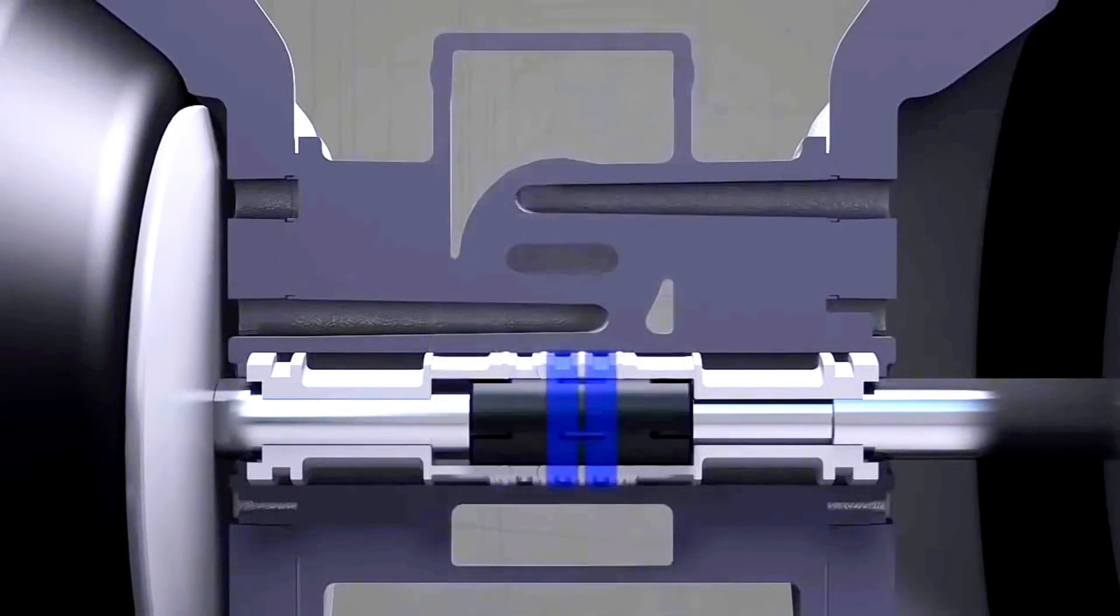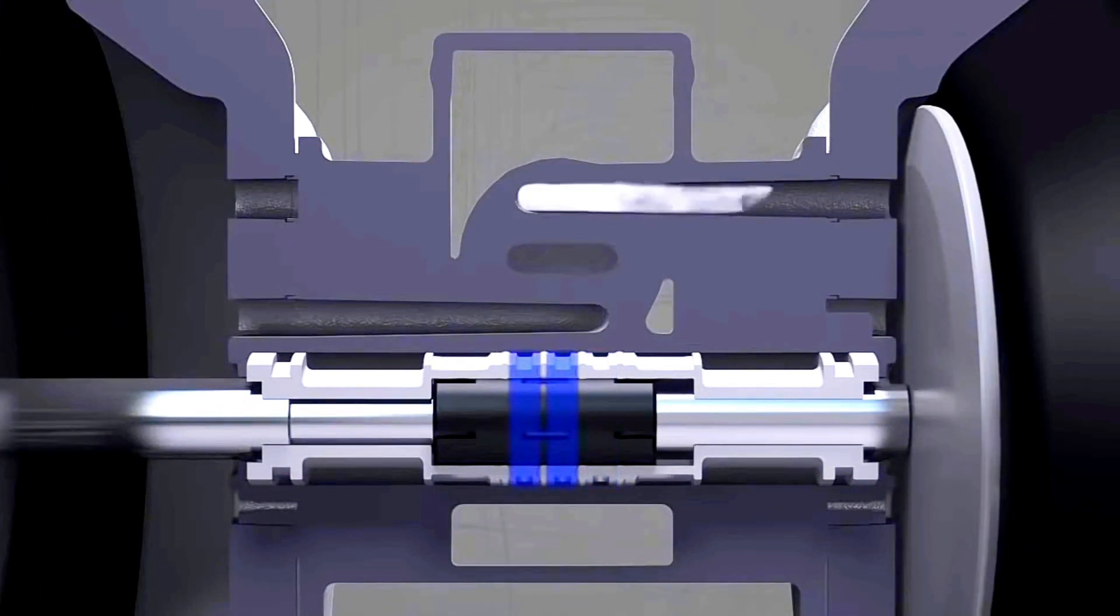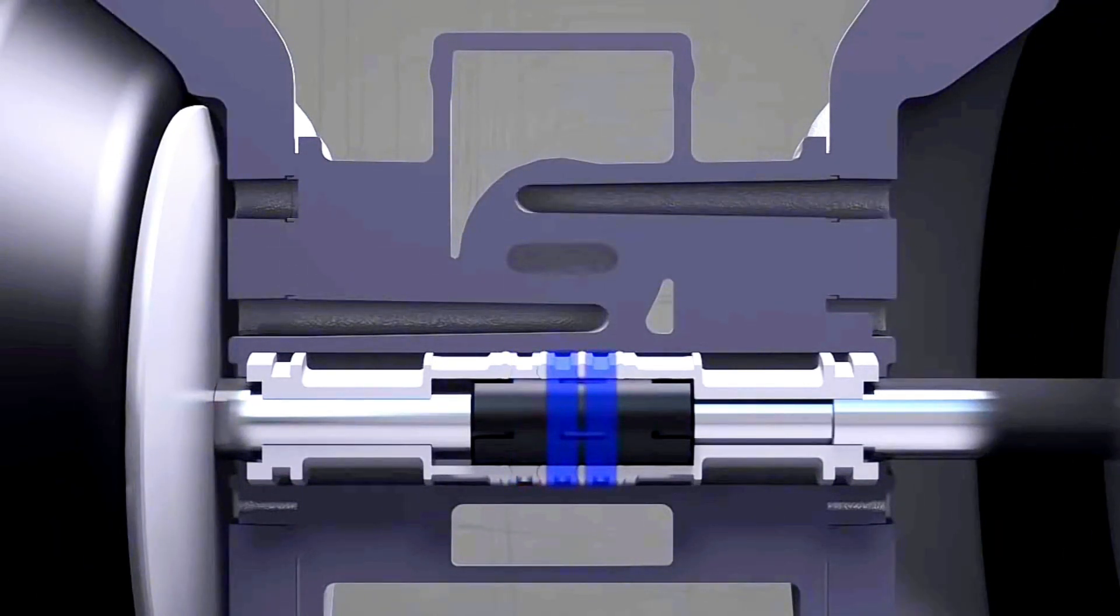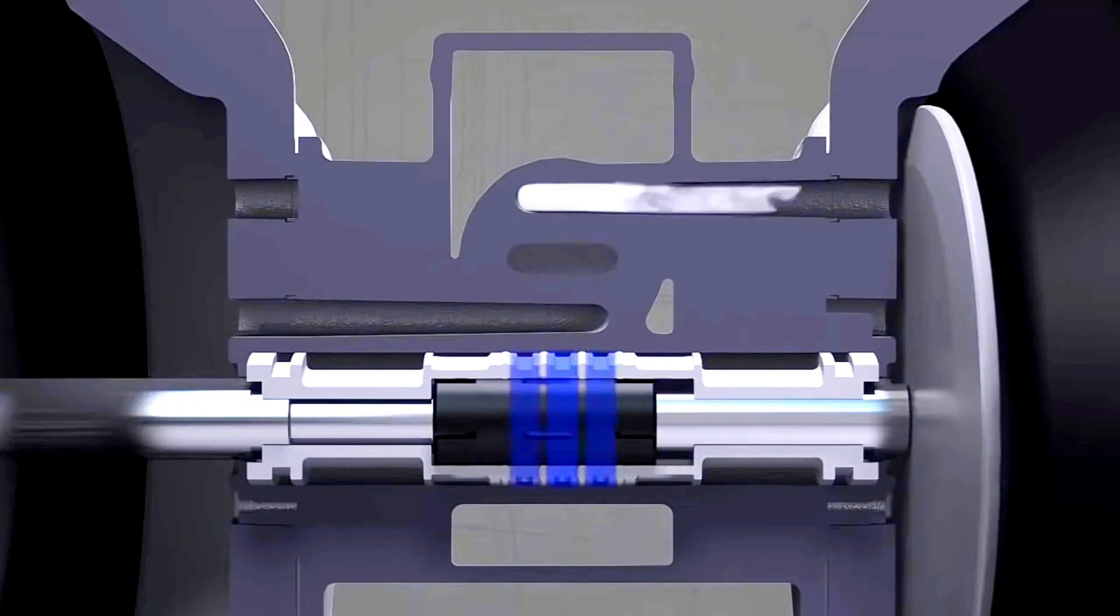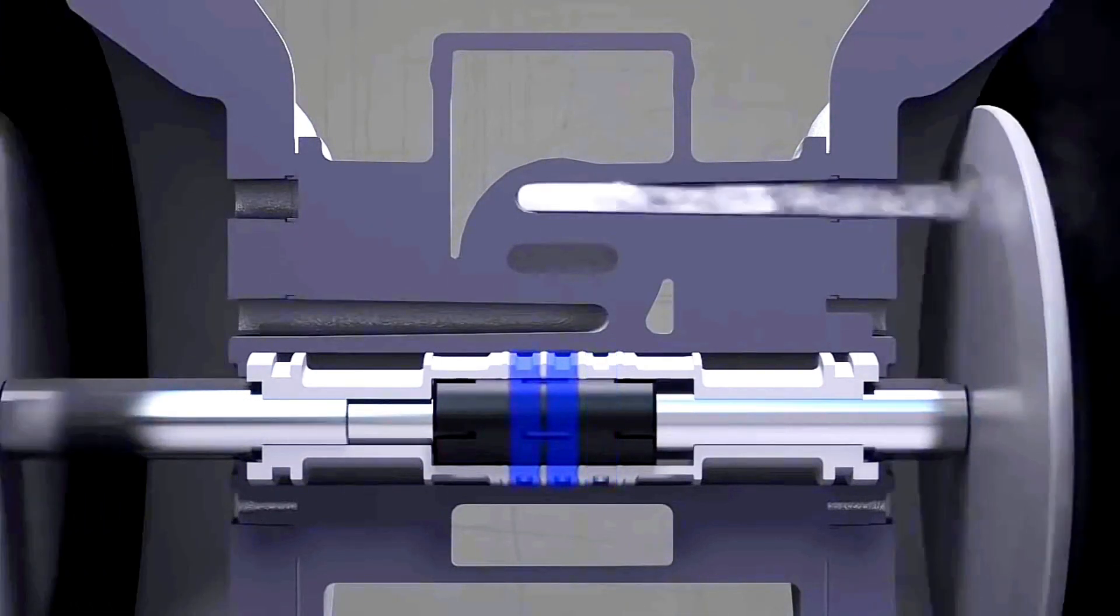Throughout the cycle, one side pressurizes as the other exhausts. This process constantly alternates between the pilot and main air valve to create a continuous cycle.